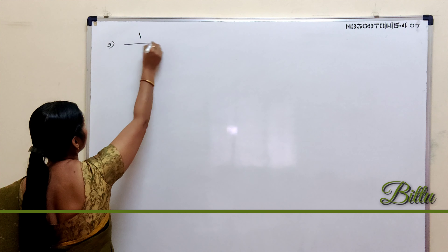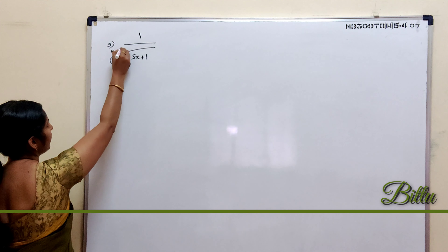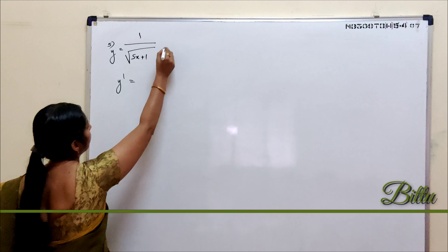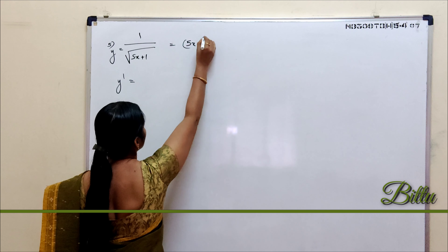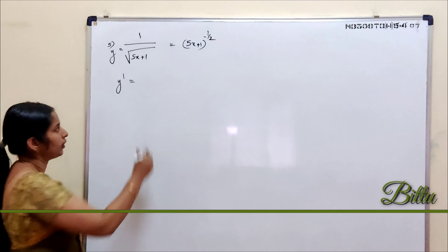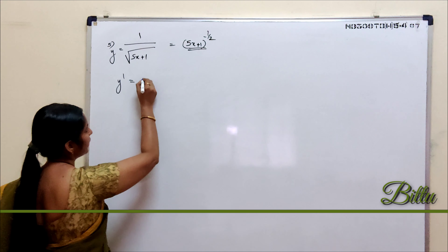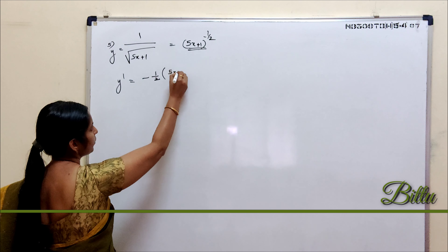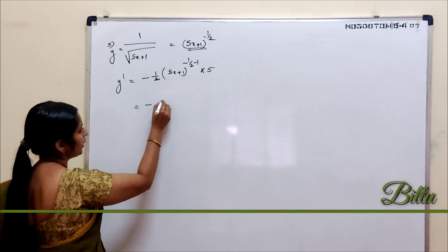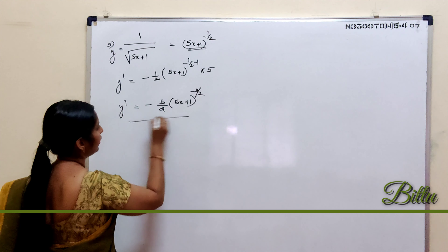Next, consider y = 1/√(5x + 1). We rewrite this as (5x + 1)^(−1/2). Applying the derivative rule for xⁿ with n = −1/2, and in place of x it is 5x + 1, the derivative is (−1/2)·(5x + 1)^(−3/2), and we multiply by the derivative of 5x + 1, which is 5. So y' = −5/2 · (5x + 1)^(−3/2).